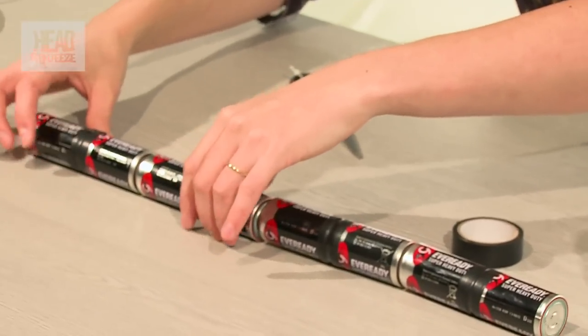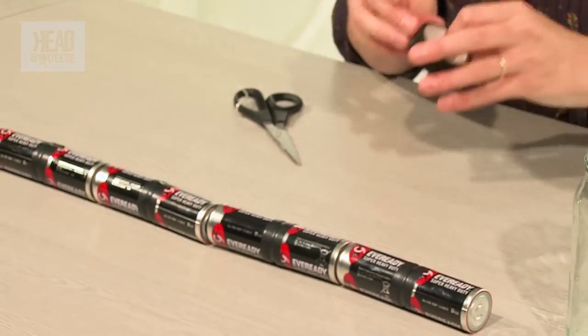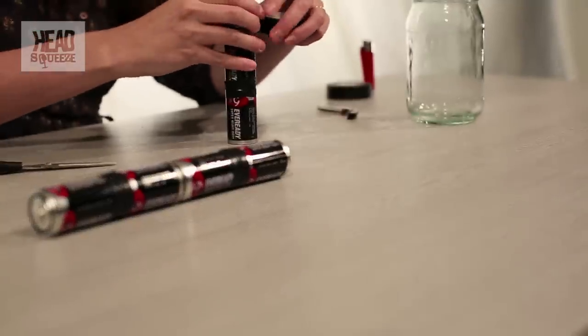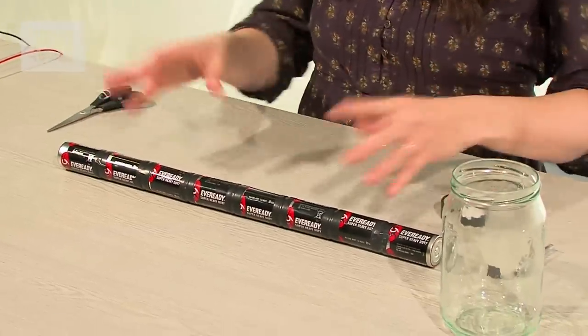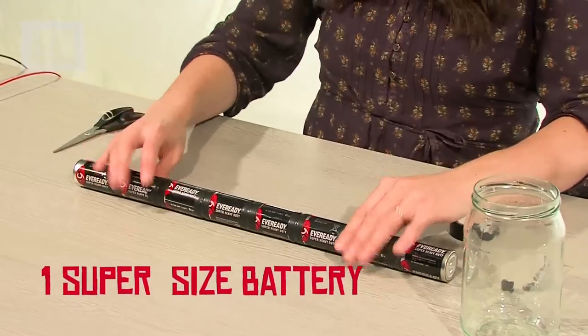Right, so we've got four lots of two. And then we've just got to put them all together like this to make a ridiculously long battery. Let's pop them together. Like that. Right, and there we have it. One supersized battery.